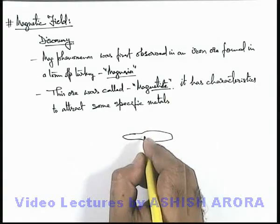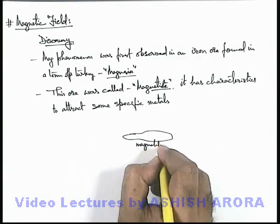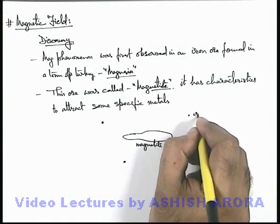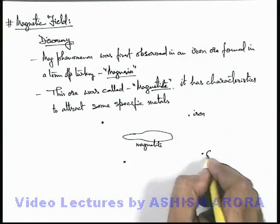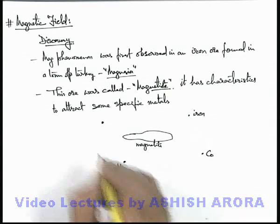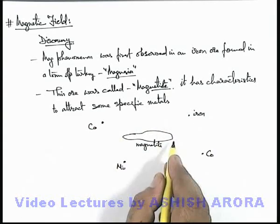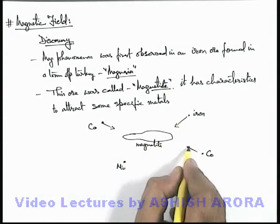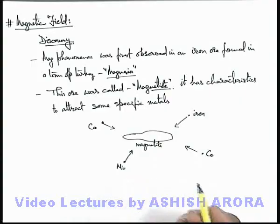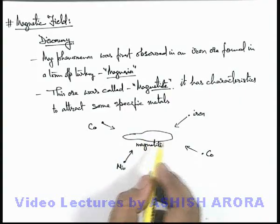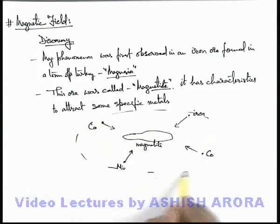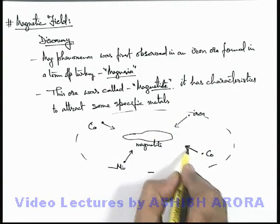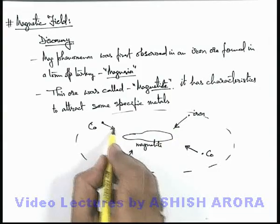If this is the iron ore which was called magnetite, in the surrounding of this magnetite, say if some metal particles of iron, or cobalt, or nickel are placed, then the magnetite ore had properties to attract these metal particles towards it. Or we can say that this magnetite ore creates some kind of a vector field in the surrounding, which exerts a force on these metal particles towards the magnetite ore.